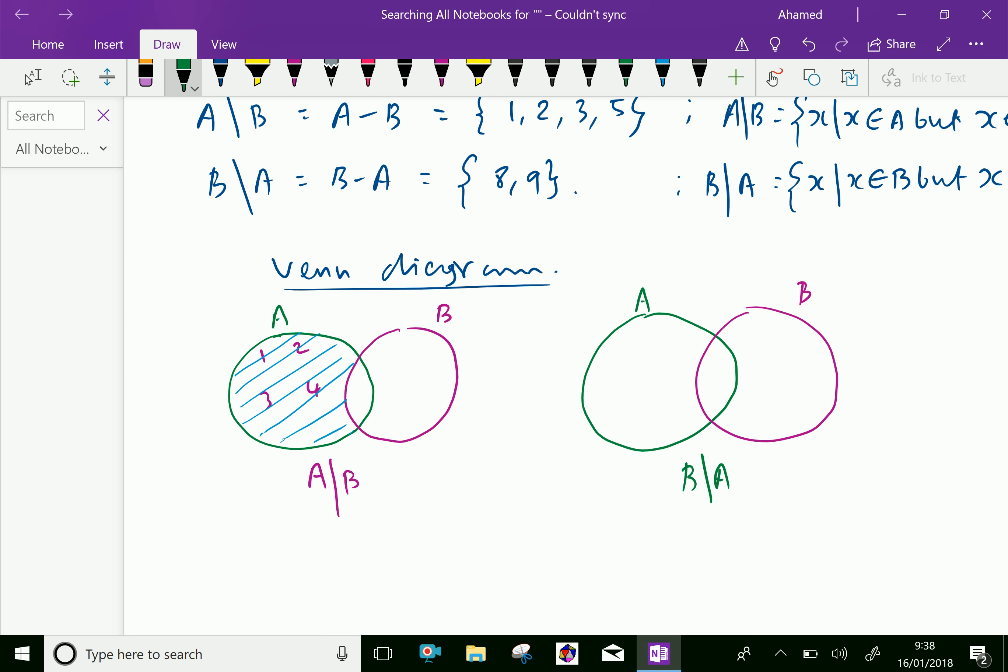You can write elements which are in B, but not in A, is 8 comma 9. Let us set this area, like this area represent B slash A, this area represent B slash A.